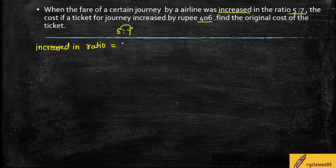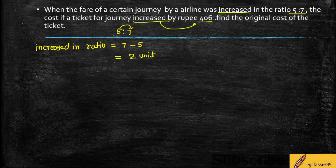How has it increased? From 5 to 7, that means 7 minus 5 equals 2 units increased. The 2 units increased by Rs. 406.